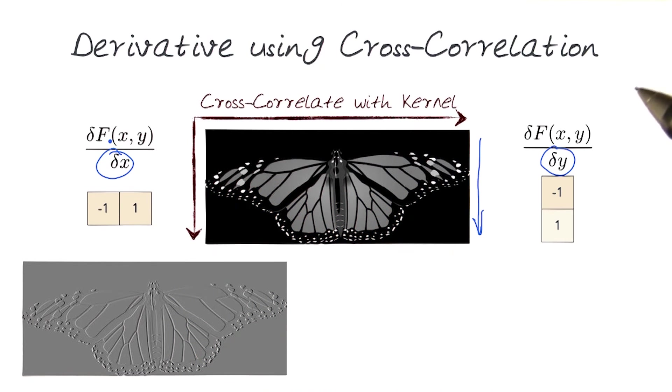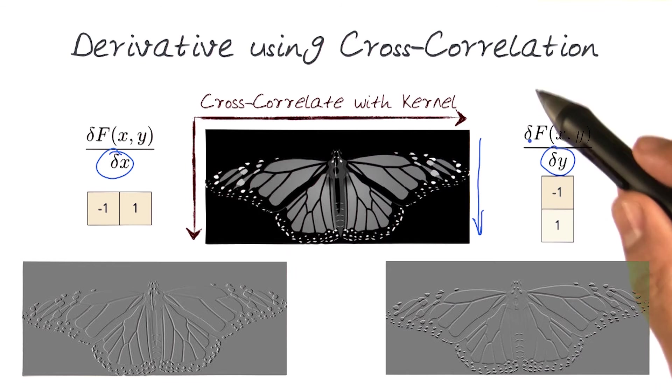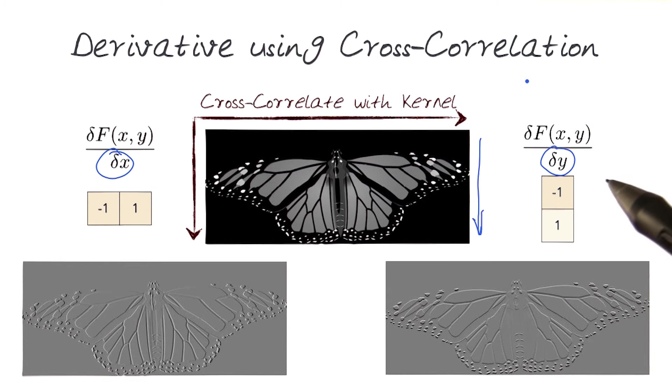Looking at this process, we will actually now notice the same monarch butterfly starts giving me information as I traverse down this way. So basically, what we've done is taken these two kernels and applied them separately to this original image using the cross-correlation method, something we have looked at before.